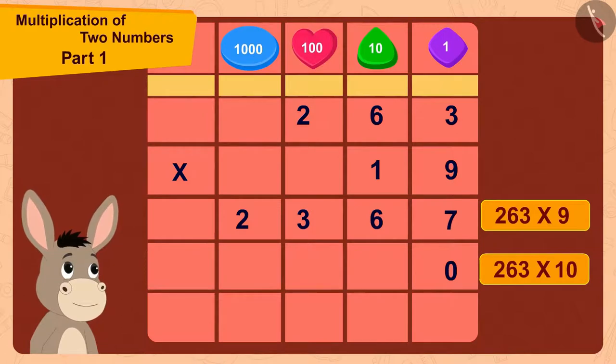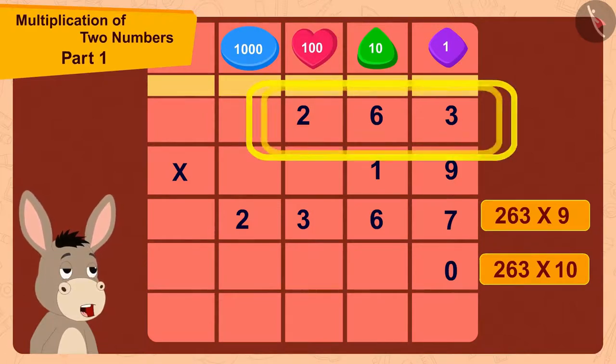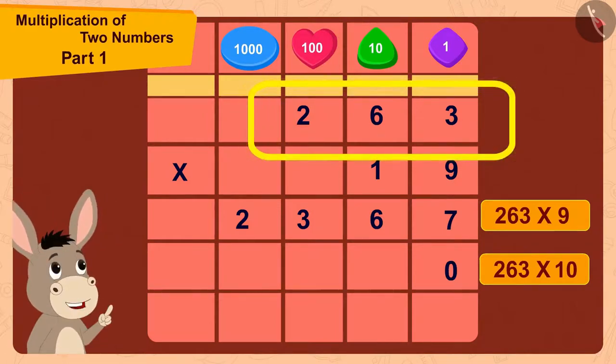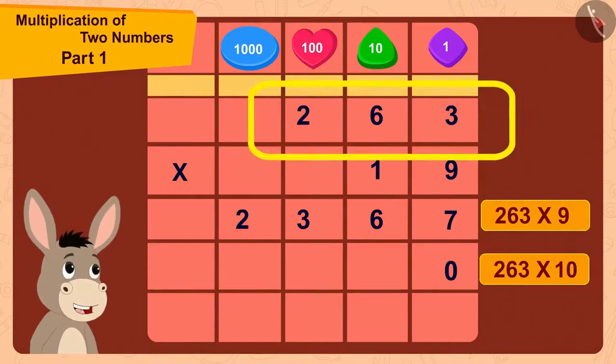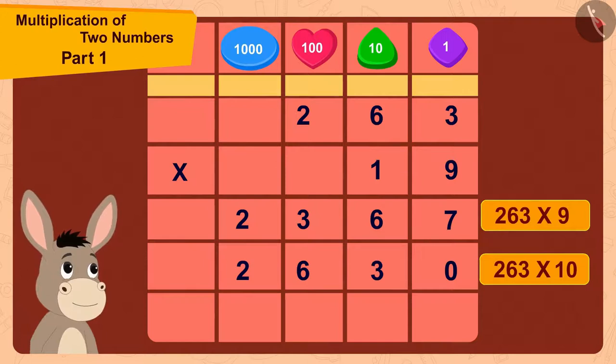And then I just have to multiply 263 with 1. 263 multiplied by 1 is 263.